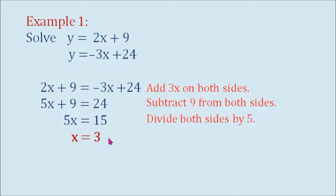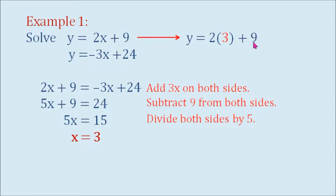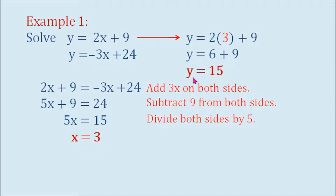Now we can find the value of y by using either equation. Using the first equation, we are going to substitute x with 3. So that's y equals 2 times 3 plus 9. And 2 times 3 is 6, so that's y equals 6 plus 9, which equals 15. So our x is 3, our y is 15, and we can write our answer as (3, 15).